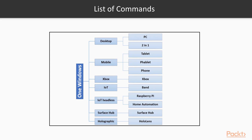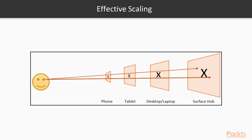Next we will see generic design principles of UWP apps. First is effective scaling. UWP apps can automatically adjust the size of controls and fonts based on the resolution of the device where it is running. For example, a control having a 20 pixel font size should look proportionate on phones, tablets, desktop PCs, laptops, and surface hubs.